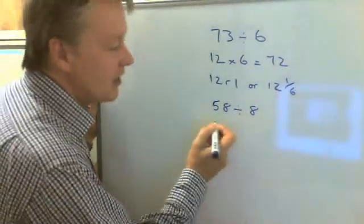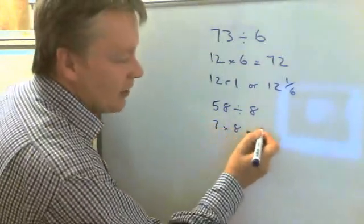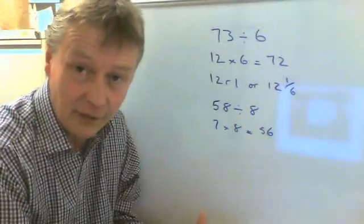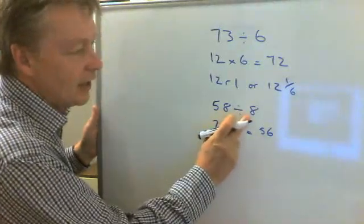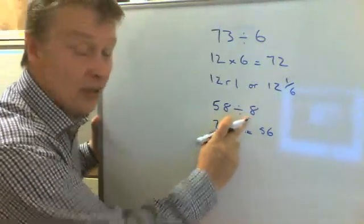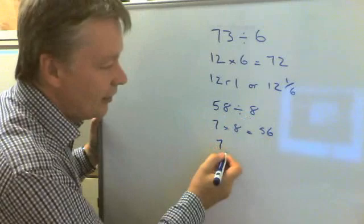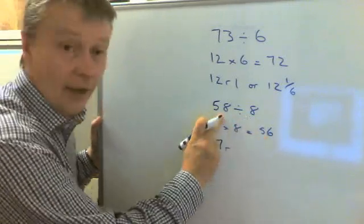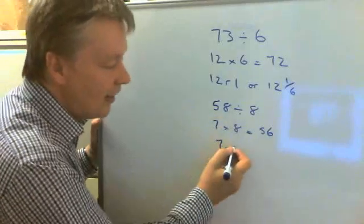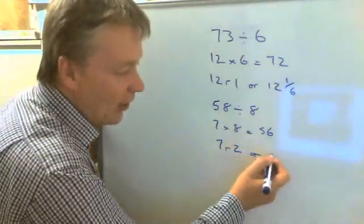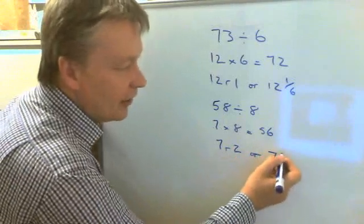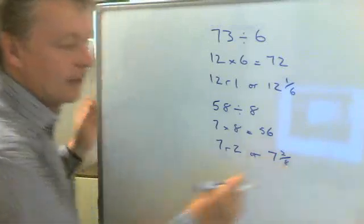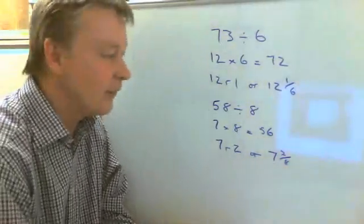you would know that 7 times 8 equals 56. Well, if I know that 7 times 8 is 56, then it means that I can get 7 lots of 8. So that would be 7 remainder 2, because I've used 56 and I have 58 available. So 7 remainder 2, or if I prefer I can write it as 7 and 2 out of the 8 group availability that I wanted.